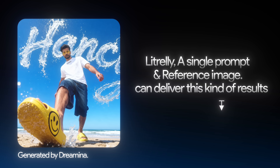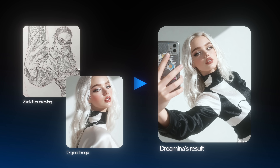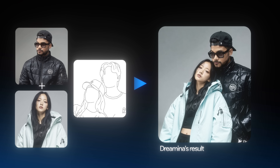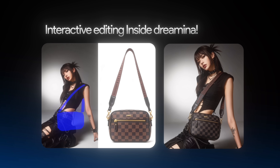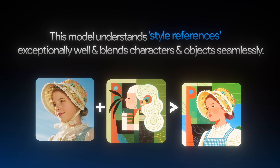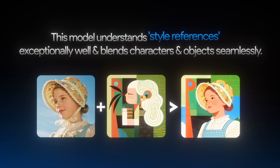I tested some prompts to check Dreamina's Image 4.0 version, and the results are absolutely unreal. A single prompt and reference image can deliver dynamic wide shots that are perfect. You can also transfer any pose or action using a custom sketch, and the results are mind-blowing. It even provides interactive editing so you can add objects into your character. This model understands style references exceptionally well and blends characters and objects seamlessly.